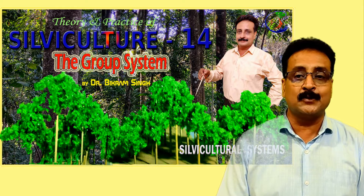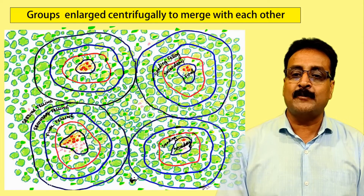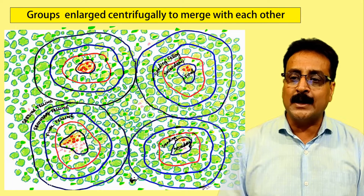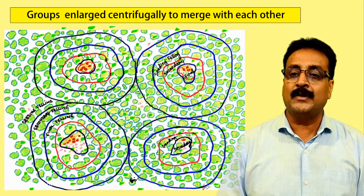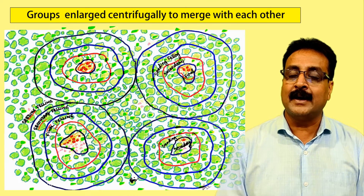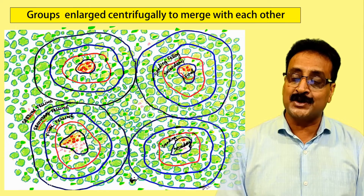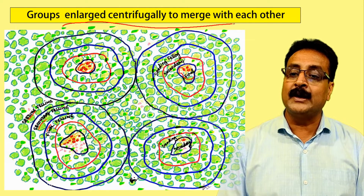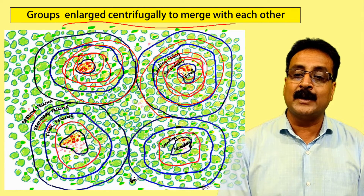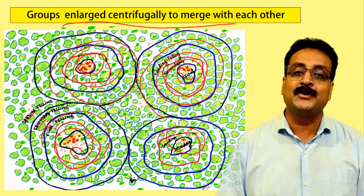In the group system, we find some advanced growth or artificially create it in a compartment, then carry out seeding felling, secondary felling, and final felling. With each round of felling, the groups enlarge centrifugally — we fell, enlarge, fell again, enlarge again — and similarly in other groups, until they finally merge with each other.